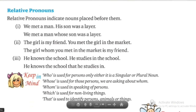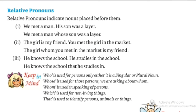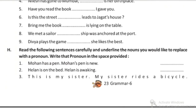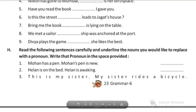Next is relative pronoun. Relative pronouns indicate nouns placed before them. Like 'we met a man whose son was alive' — 'whose' is the relative pronoun. The girl whom you met in the market is my friend — 'whom' is the relative pronoun. These relative pronouns, whose and whom, can refer to a singular or plural noun. For example: 'This is my sister who rides a bicycle' — 'who' is the relative pronoun here.